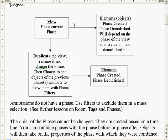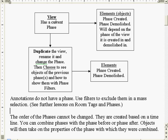Once you have a view working, you duplicate it, rename it, and change the phase - move it to phase two or phase three. Then you choose how to show objects from previous phases using the phase filter. You can have objects in the next phase added to the duplicated view. This view is back in phase one, maybe this one is phase two, duplicate again for phase three.